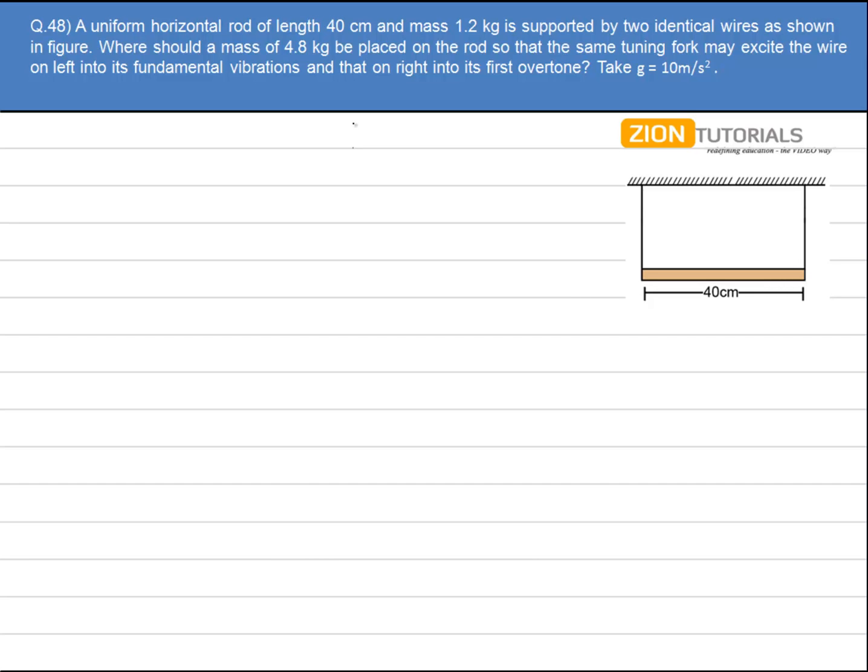A uniform horizontal rod of length 40 cm and mass 1.2 kg is supported by two identical wires as shown in figure. Where should a mass of 4.8 kg be placed on the rod so that the same tuning fork may excite the wire on left into its fundamental vibration and that on the right into its first overtone?